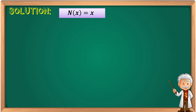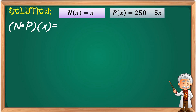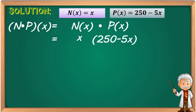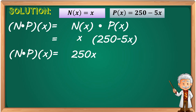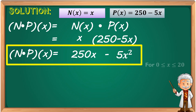Solution: Let n(x) = x and p(x) = 250 − 5x. Then n times p(x) equals n(x) multiplied by p(x), which equals x times (250 − 5x). All you have to do is multiply x by (250 − 5x). Therefore, n times p(x) = 250x − 5x².